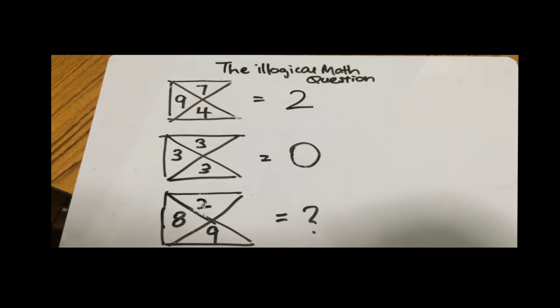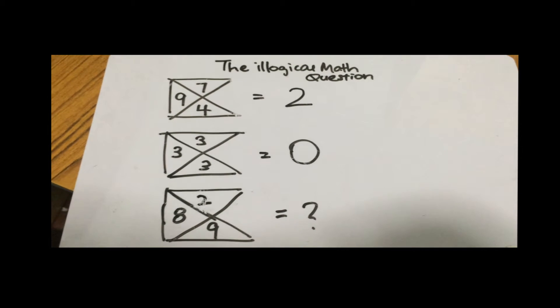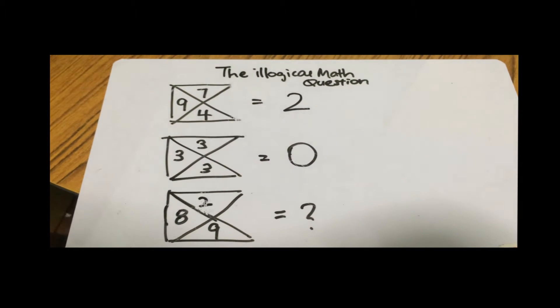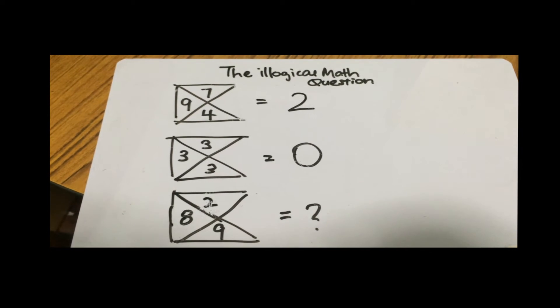So the first hint is that 794 gives 2 and 333 gives 0. So what does 289 give you?